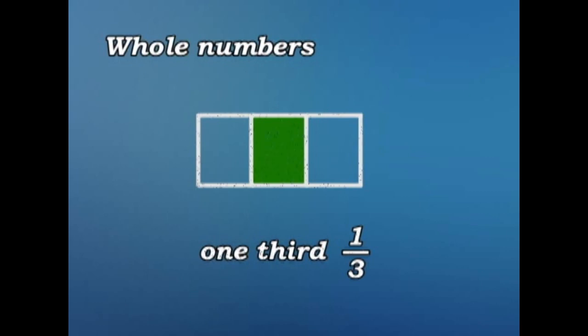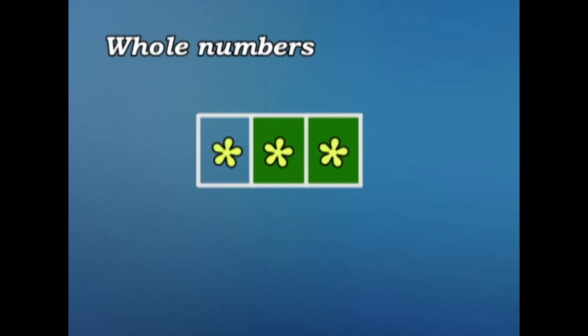Let's look at the next box. How many equal parts are there? There are three. There are three thirds. How many have we colored? Two.